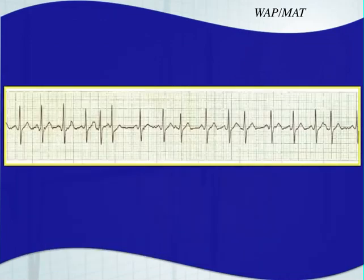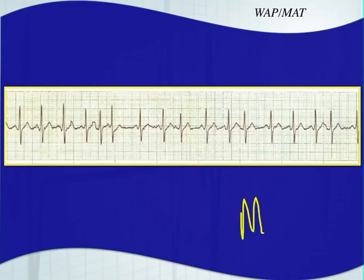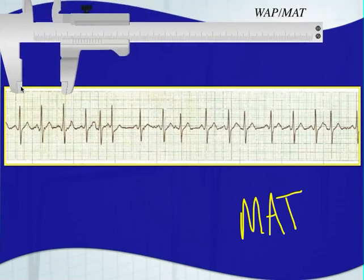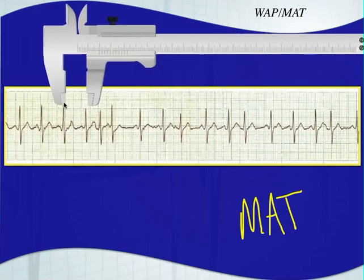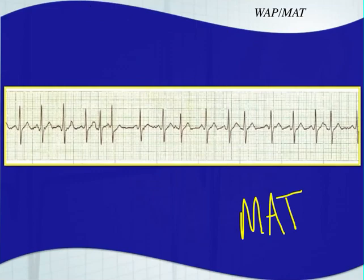Here's an example of multifocal atrial tachycardia because this one is obviously faster than 100 beats per minute. You'll notice the P waves are rapidly changing — you have at least three different P wave morphologies and no extra P waves. Your PR intervals are changing on this EKG and your QRS complexes are narrow. This would be considered a multifocal atrial tachycardia. It is very irregular — if we measure that out, it's very irregular. Your P waves are all different shapes and your PR interval is constantly changing.